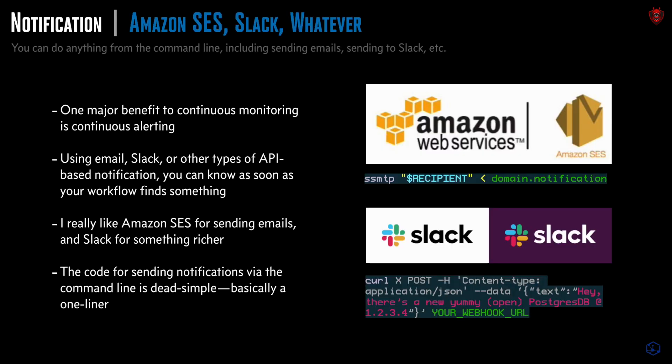Once all the modules are running continuously via cron — discrete pieces of code producing discrete outputs, all wired up and running continuously — you can rig them up to notify you when they find something. This is super easy to do via email, Slack, or really anything with an API. I'm really partial to Amazon SES for email; you can send tons of emails with it for like pennies a month, all from the command line. You could even set up your own Slack channel where you monitor your favorite targets or bounties and send yourself a Slack message when your automation finds something new.